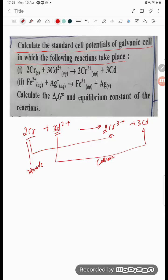So it is very simple. E°cell, if you are writing, is E°cathode minus E°anode. What is the cathode? Cd²⁺/Cd minus E°, Cr³⁺/Cr.